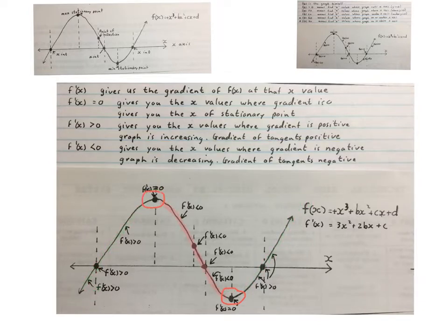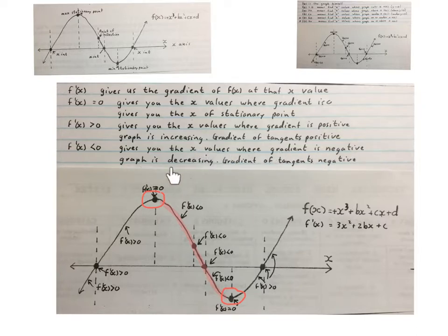The next notation: f'(x) is smaller than zero — where is the derivative negative, where is the gradient negative? It gives us the x values where the gradient is negative, the graph is decreasing, and the gradients of the tangents are negative. That means they're talking about all the x values where the red line is, excluding the turning points.